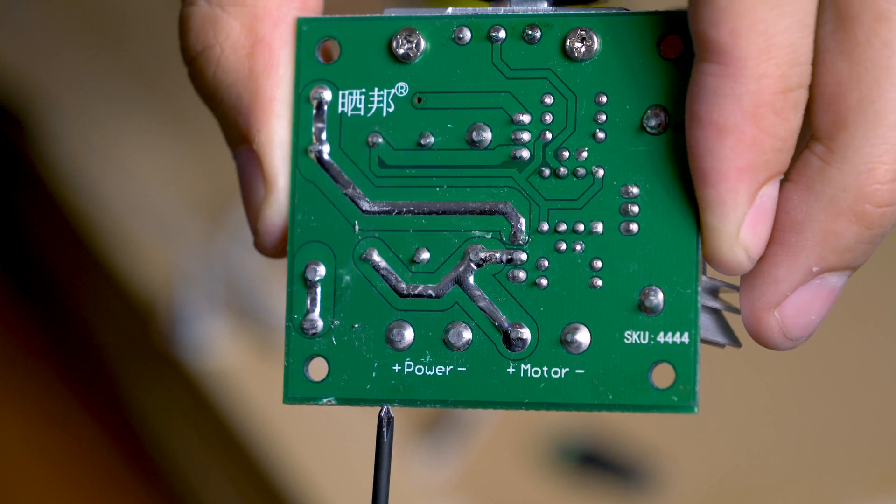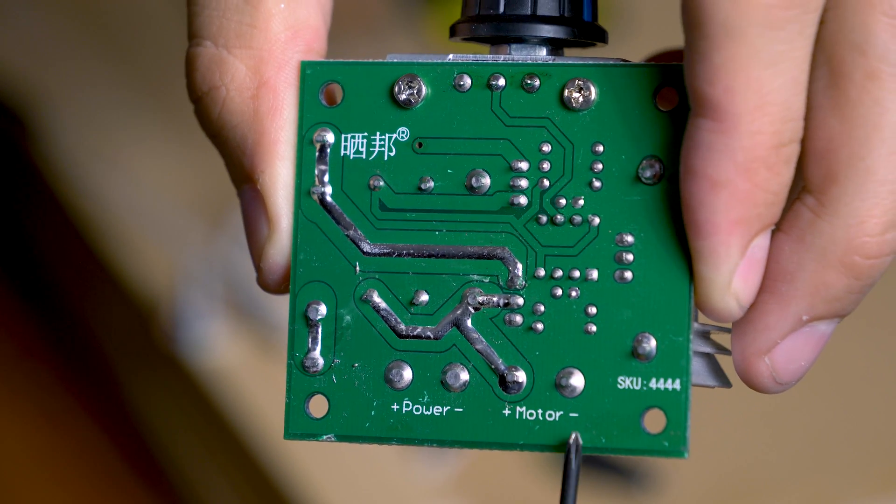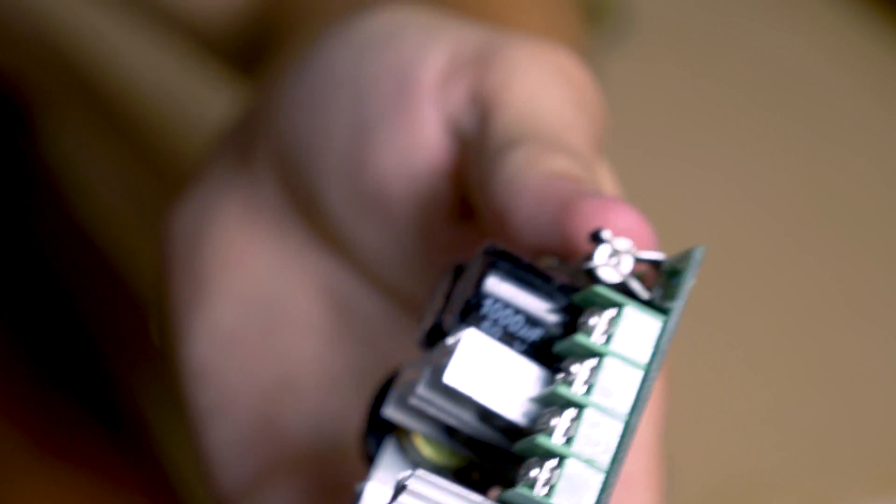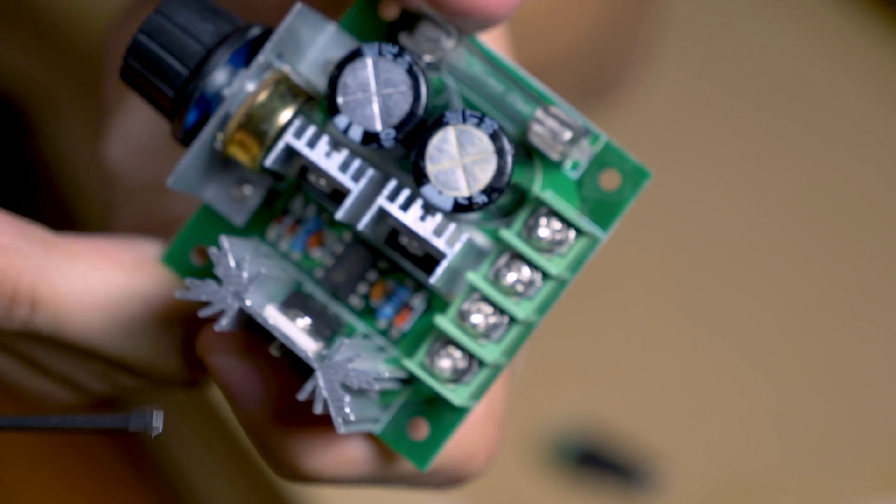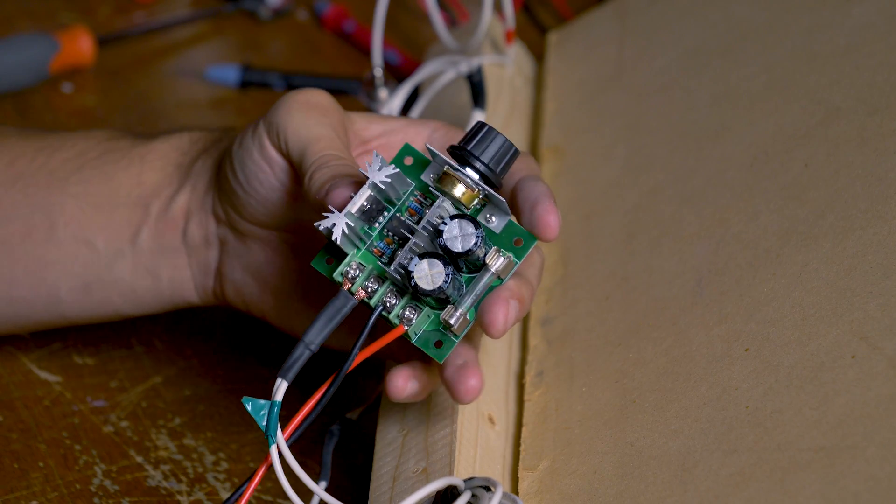There we go. So you can see the power has a positive and negative and the motor has positive and negative over here. And those correspond on the front of the unit to these screws right here. And that's really all there is to it.